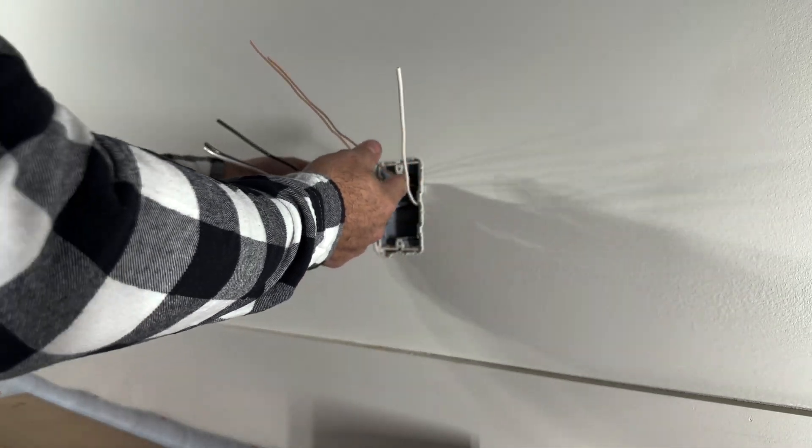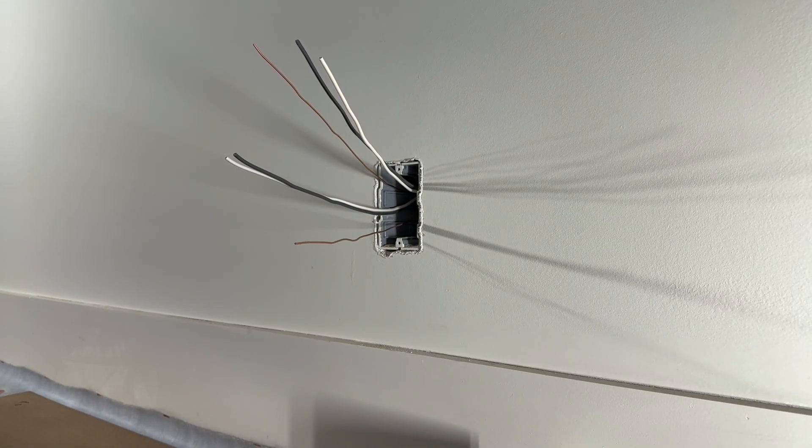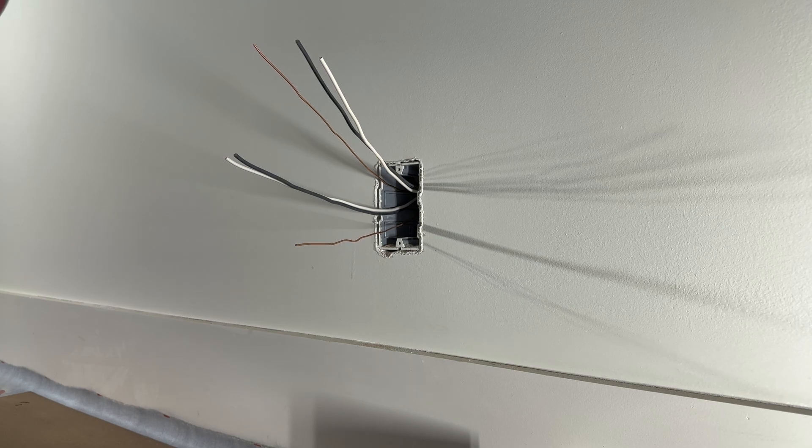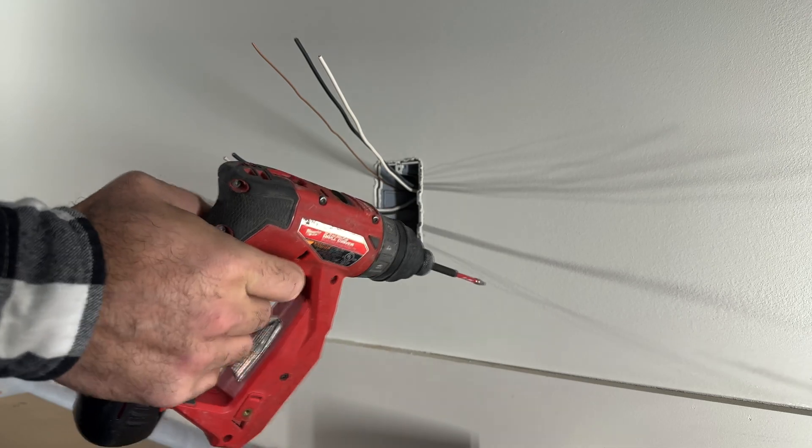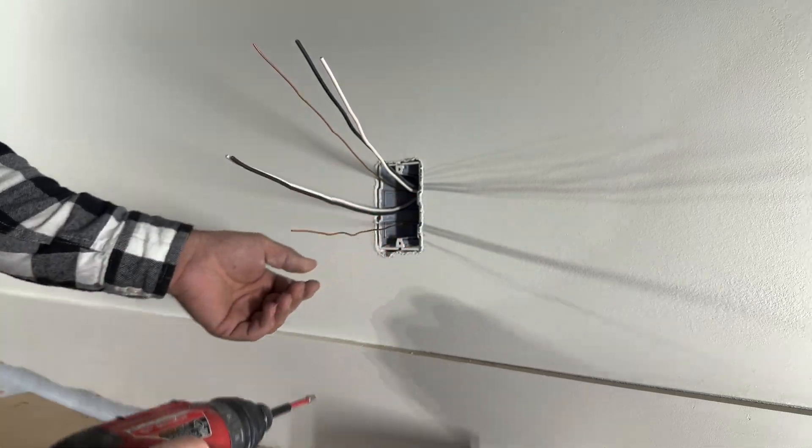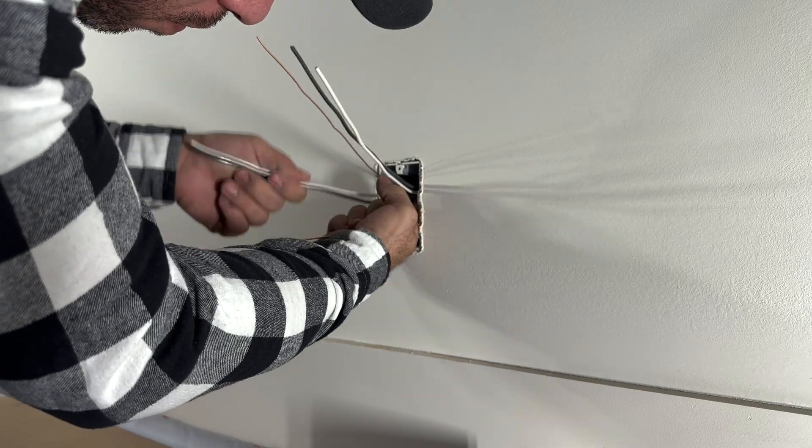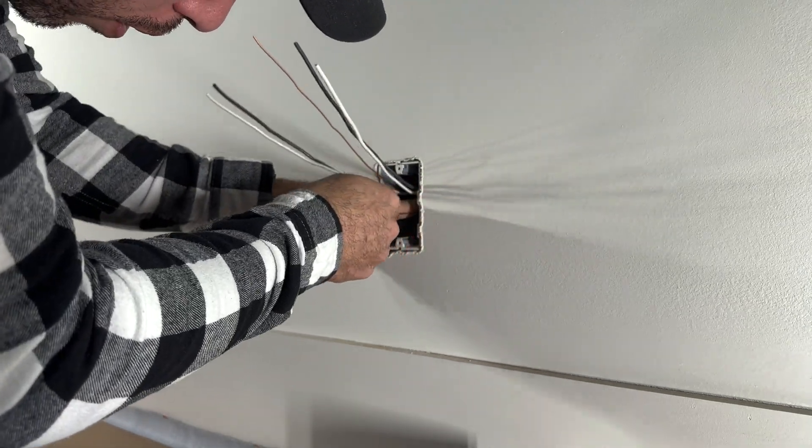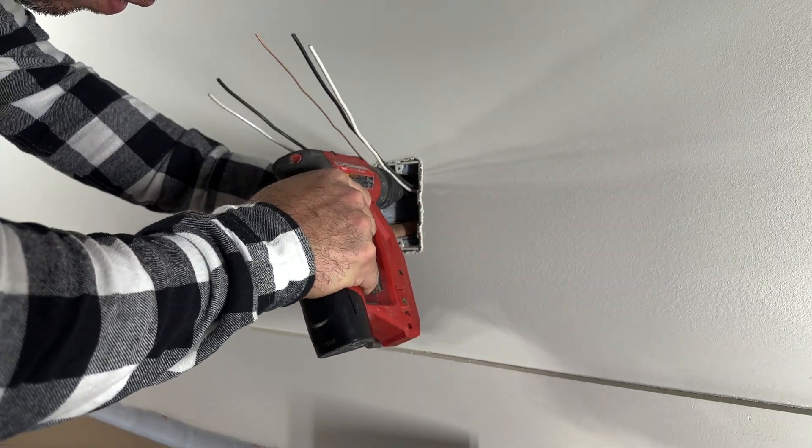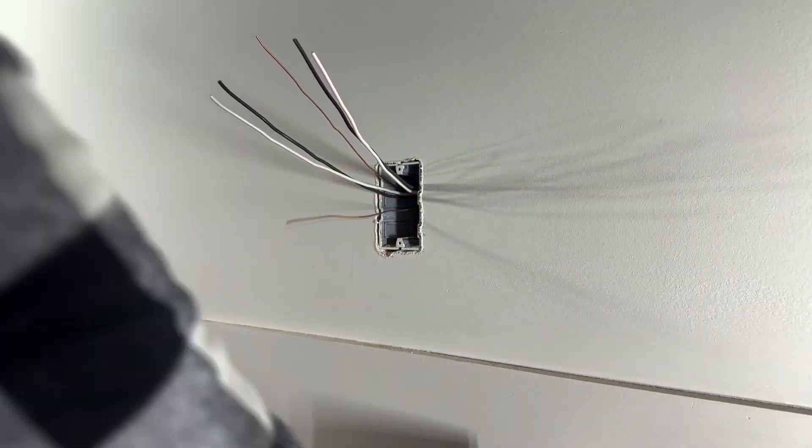First we will wrap one ground wire at the back of the box where the screw for grounding is. In this case we will use this beauty. Wrap the screw clockwise. Make sure it is tight and solid.